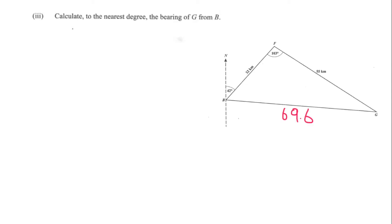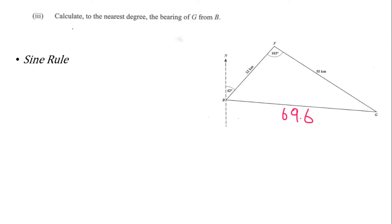Part three asks us to calculate, to the nearest degree, the bearing of G from B. We're looking at calculating from the northern line at B, so it will be 42 degrees plus whatever angle is between BF and BG. We'll use the sine rule to solve this.